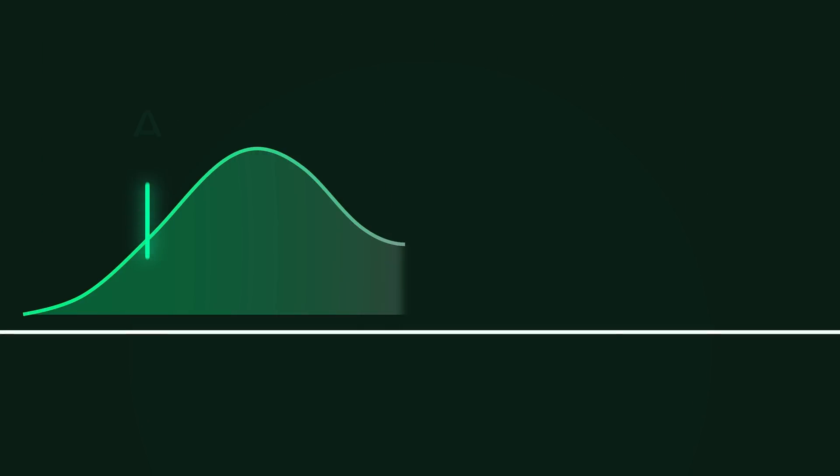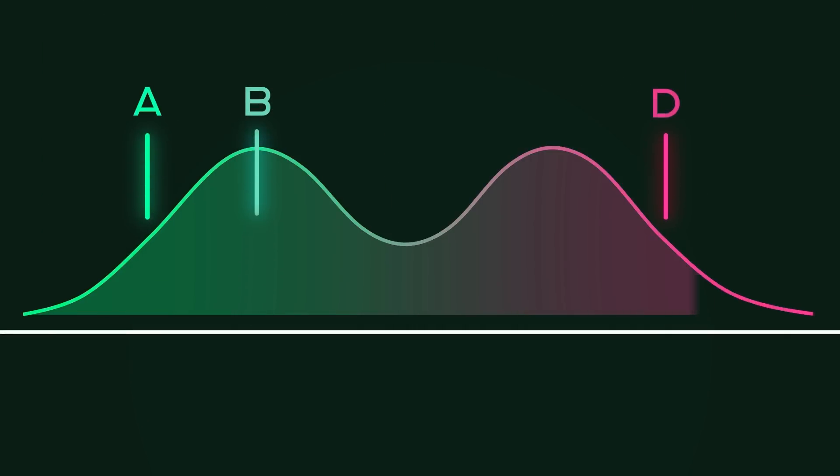For instance, is male A more male than male B? Is female D more female than female C? And what exactly is on the x-axis? As Wright adds, quote: